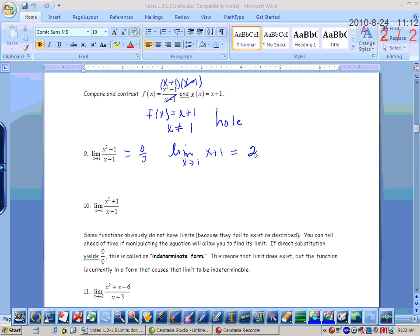Alright, number 10 looks pretty similar, but now when I plug in x equals 1, I still get a 0 on the bottom, but what do I get on top? 2. That is not an indeterminate form. Indeterminate is just 0 divided by 0. Plus, can I factor x squared plus 1? No. So 2 divided by 0, what do you think that tells me about the limit? Very good. It does not exist.